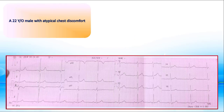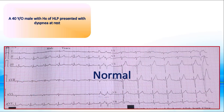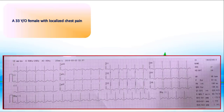Here is an EKG from a 22-year-old male with atypical chest discomfort. There is an isolated shallow T inversion in D3, which is considered normal. The next EKG belongs to a 40-year-old male with a history of hyperlipidemia presenting with dyspnea at rest. There are upright T waves in all leads except V1, AVL, and AVR — therefore this is normal. Remember that isolated T inversion in D3 and AVL is a normal finding.